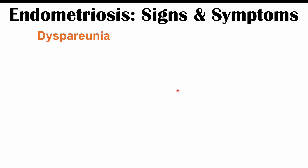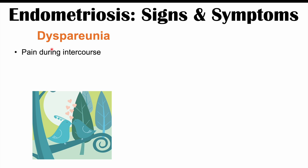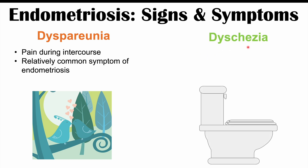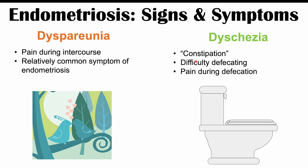Another symptom of endometriosis is dyspareunia, which is pain during intercourse, and this is actually a relatively common symptom. We can also see dyschezia occurring in endometriosis patients — this is essentially constipation, or more specifically difficulty defecating, with pain during defecation or trouble with defecating.